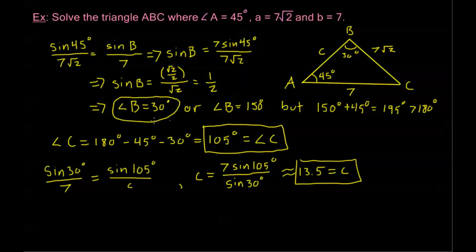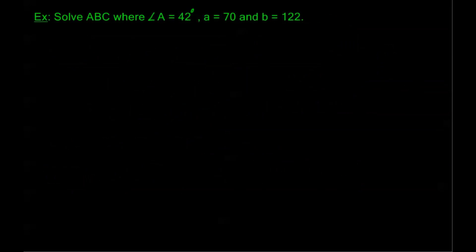So we've solved the triangle — we now have all six pieces of information: side C ≈ 13.5, angle B = 30°, and angle C = 105°. Now let's look at another example. Solve triangle ABC where angle A = 42°, side A = 70, and side B = 122.